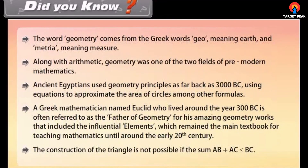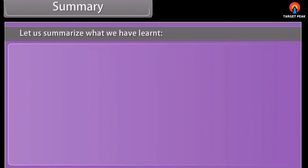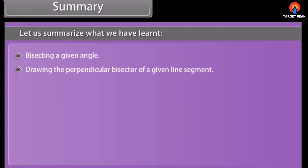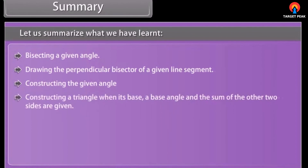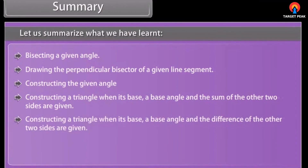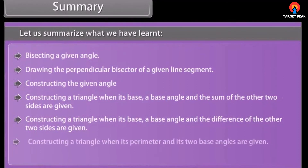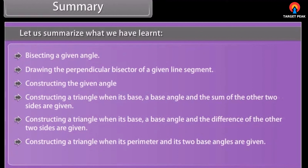Note: the construction of a triangle is not possible if the sum AB plus AC is less than or equal to BC. Summary of what we have learned: bisecting a given angle; drawing the perpendicular bisector of a given line segment; constructing a given angle; constructing a triangle when its base, a base angle and the sum of the other two sides are given; constructing a triangle when its base, a base angle and the difference of the other two sides are given; and constructing a triangle when its perimeter and its two base angles are given.